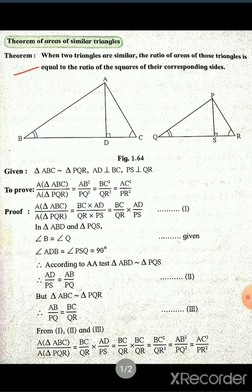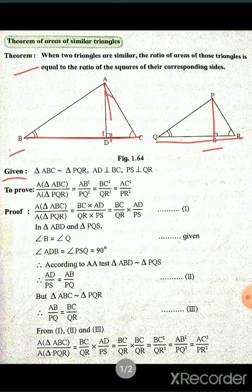Here two triangles are given: triangle ABC and triangle PQR, which are similar. What is given: triangle ABC is similar to triangle PQR, AD is perpendicular to BC, and PS is perpendicular to QR.